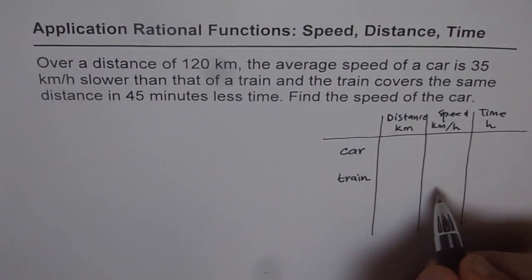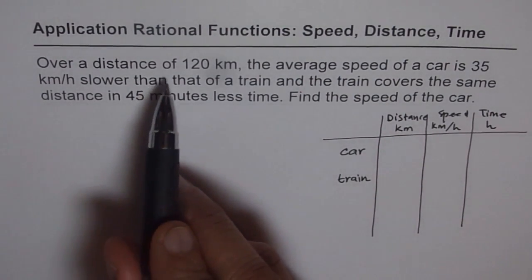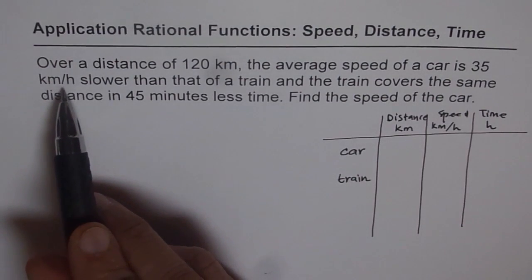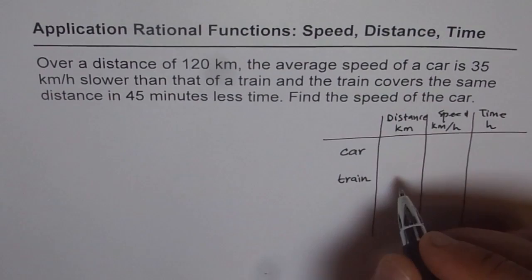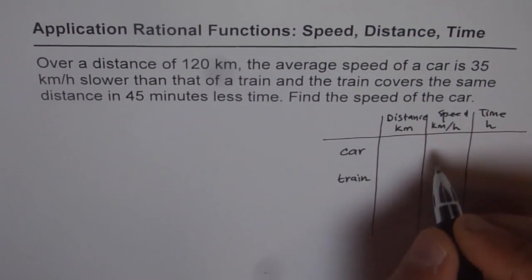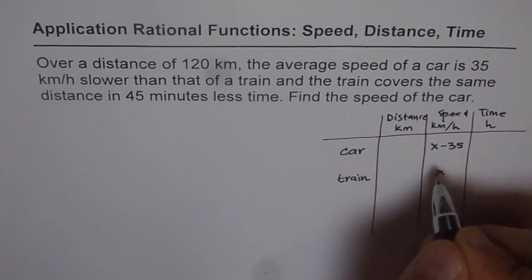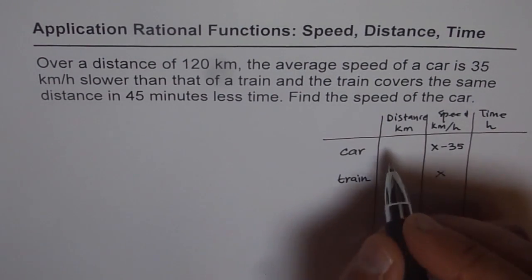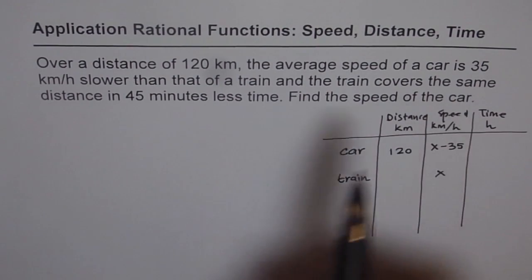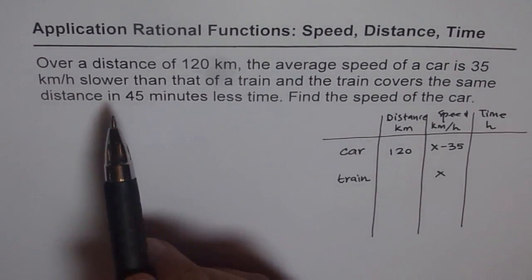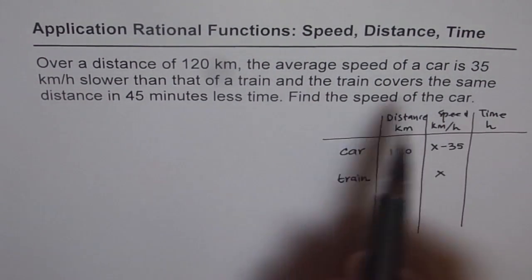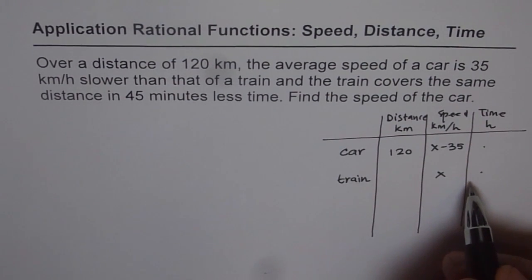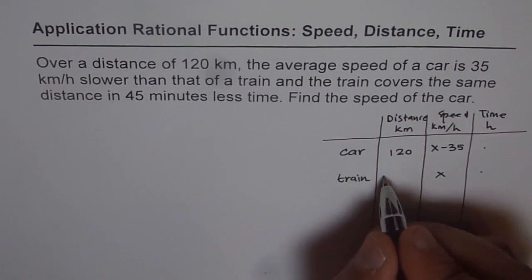To fill in these values, it's important to read the question once again. Over a distance of 120 km, the average speed of the car is 35 km per hour slower than that of the train. So if the speed of the train is x, then that of the car will be x minus 35. You can fill in the speed column, and both cover a distance of 120 km.